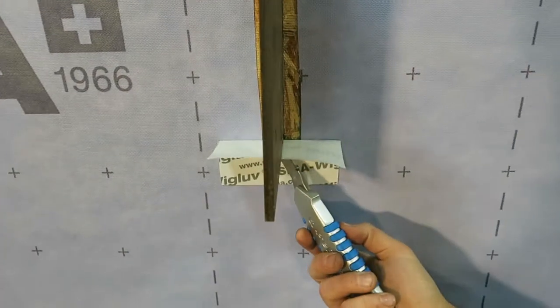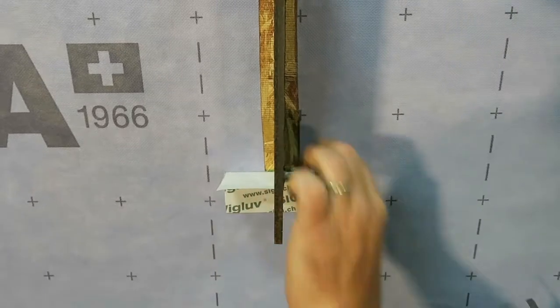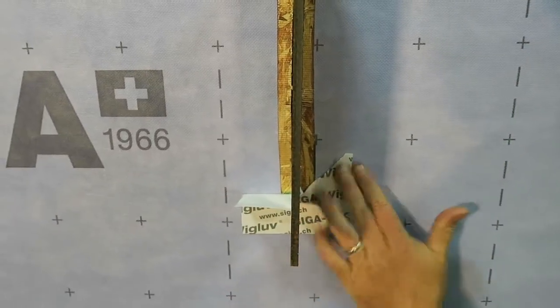Next thing we want to do is do a 45-degree cut and wrap the tape up onto the face of the knife plate and onto the face of the wall.